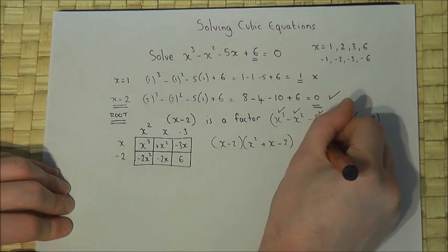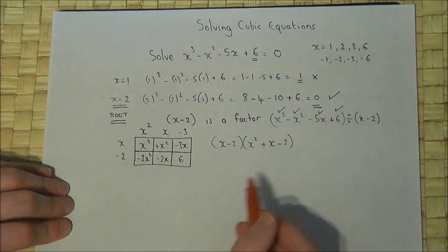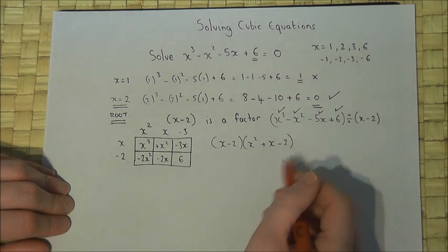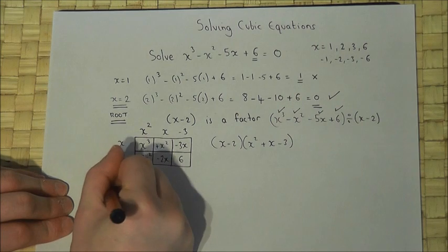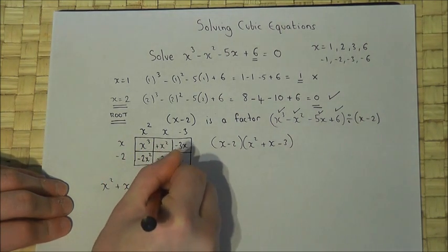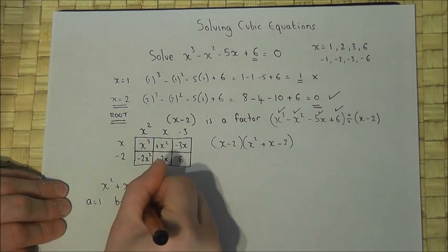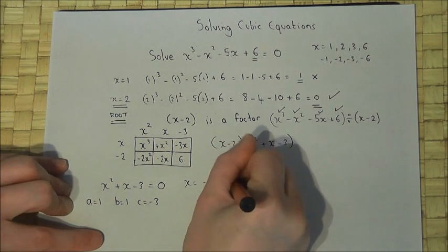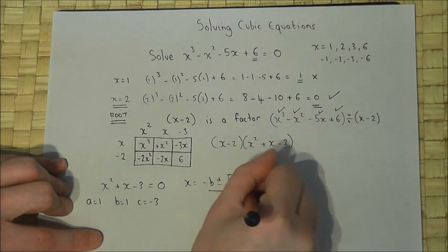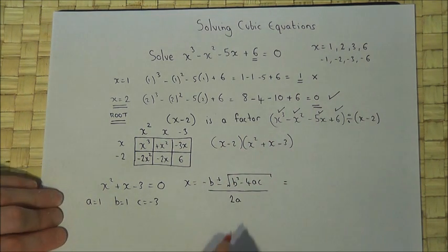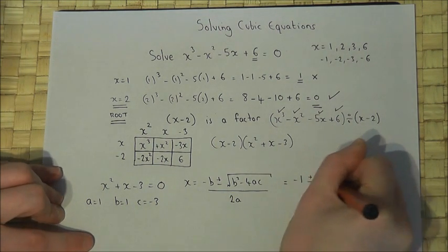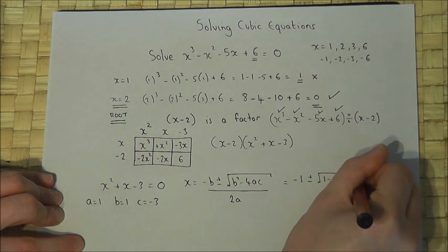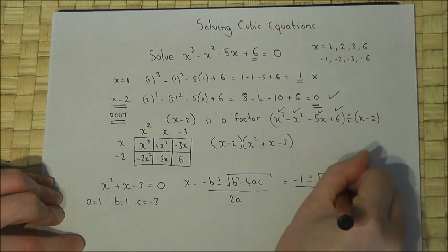So we have our known root, which is x equals 2. To find the other roots, if they exist, I must solve this equation, but it doesn't factorise. So I've got no choice but to use the formula. So to solve x squared plus x take 3 equals 0: a equals 1, b equals 1, c is minus 3. Then x will equal minus b plus or minus the square root of b squared minus 4ac, all over 2a.